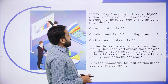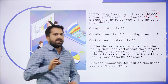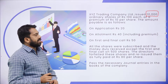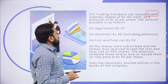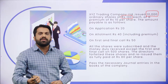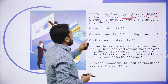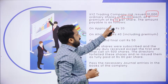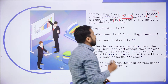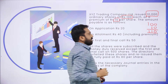XYZ Trading Company Limited issued 10,000 shares. While reading the question, you have to remember a few numbers. Number of shares: 10,000. These are ordinary shares — meaning equity shares — of ₹100 each, at a premium of ₹10. So actual value is 100, and adding the premium of 10 gives a total value of ₹110.